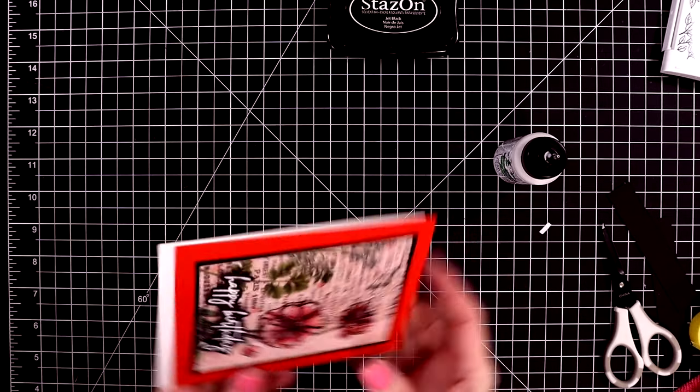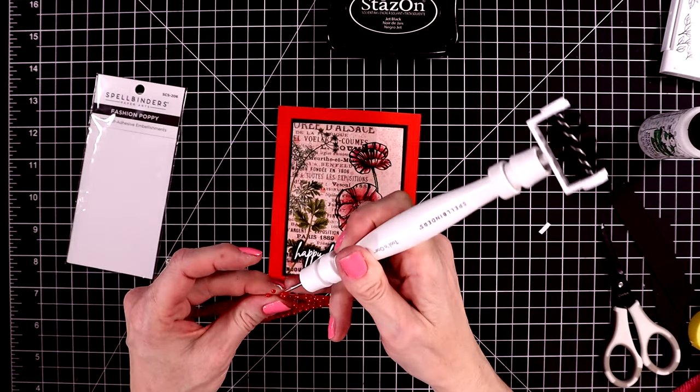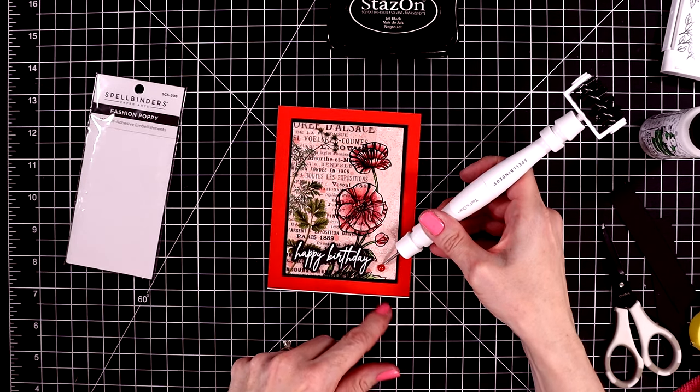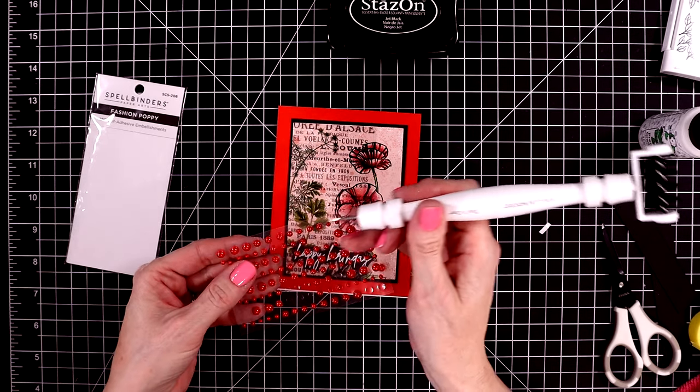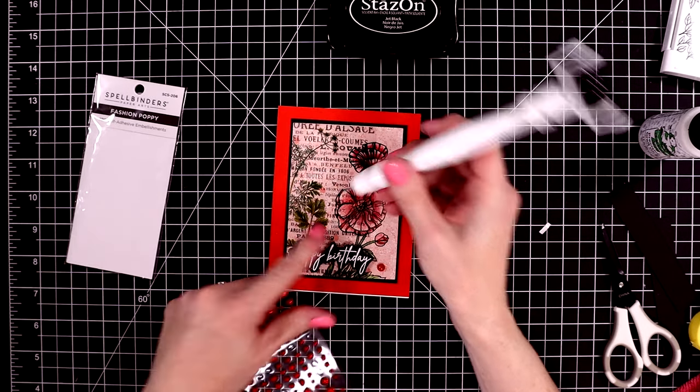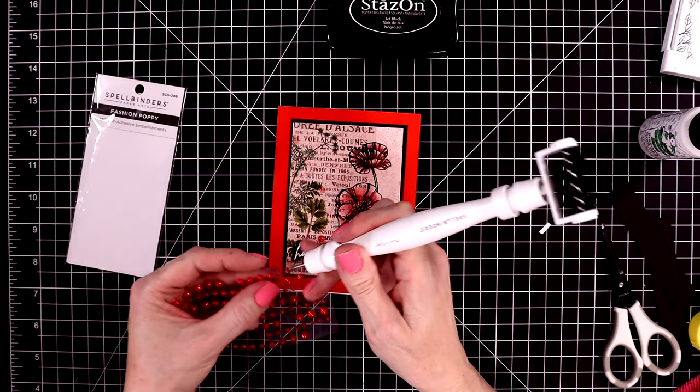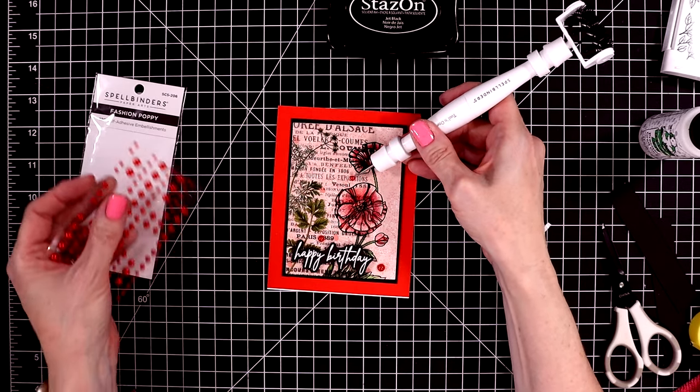To embellish this card, I'm going to pull out some poppy red pearls from Spellbinders. At the Spellbinders shop, they carry a lot of different colors of pearls. And I love these because they have the adhesive on the back already. And it's just a fun look for your cards. And card number five is done.